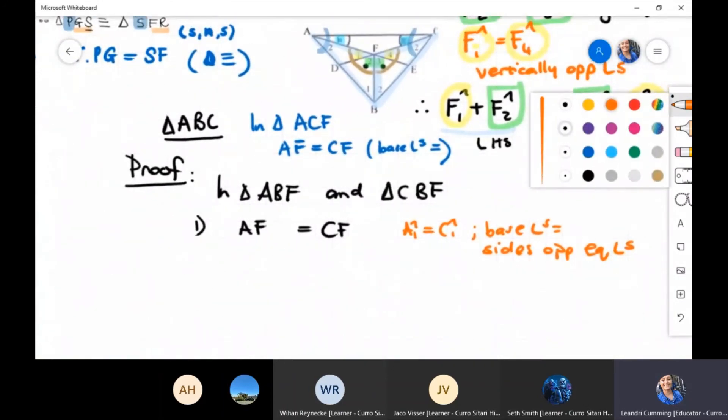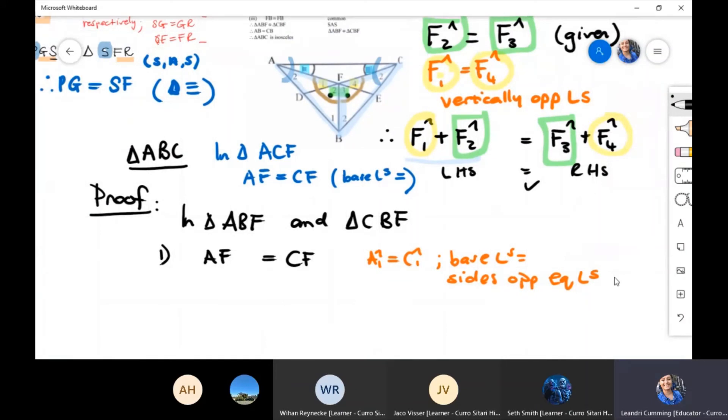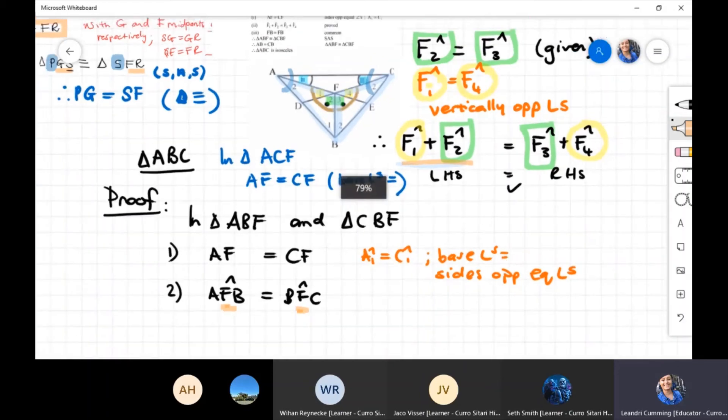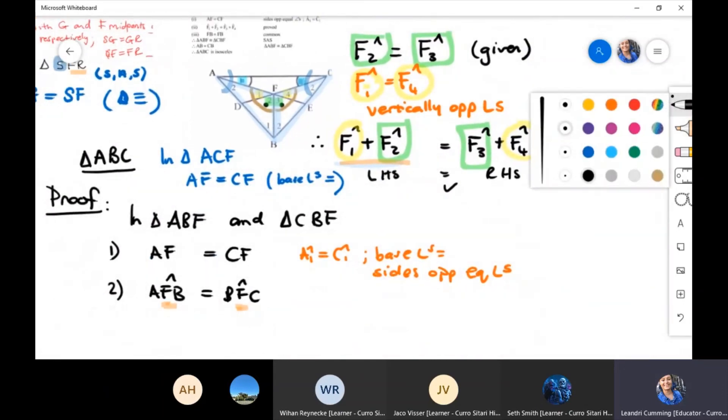Then for number two, let's see what we can do there. Number two, we can use our angles that we've proven in our previous one to be identical. Therefore angle AFB is equal to angle CFB, BFC, sorry. Let me just go alphabetical. Because this angle is what I've proven here. That one is F1 and F2. That one is F3 and F4. We've actually already proven it, right? So you may make the statement here. Proven above.